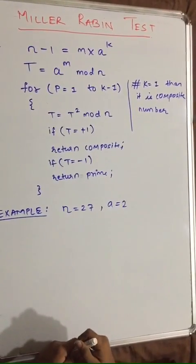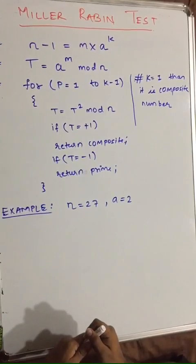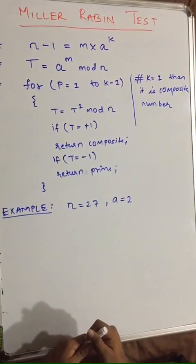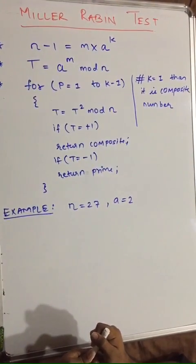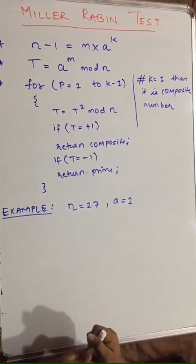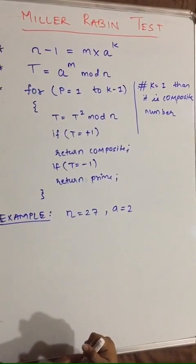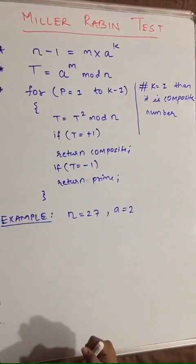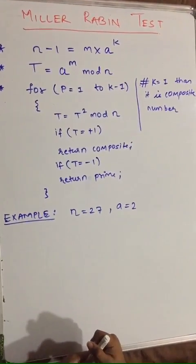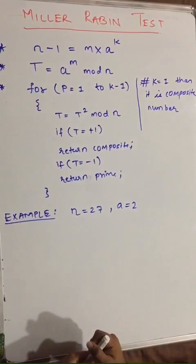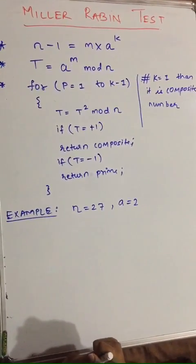Hello friends, welcome to Lecture 11. In the previous lecture, Lecture 10, we saw how primality testing fails and to overcome that we will be learning the Miller-Rabin test. So in this Lecture 11 we are going to learn about the Miller-Rabin test. There are basically three steps.